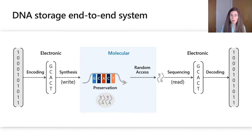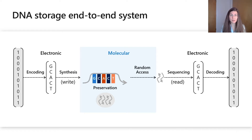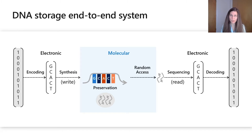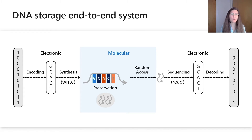Let me walk you through a DNA data storage system. We start with bits and convert them into bases — that's the encoding process. Then we make the molecules; that's the write process, also called DNA synthesis, which takes us into the molecular domain. We store those molecules, and when it's time to read, we do random access — selecting molecules that contain the data we want to read. We sequence them, which converts that information back into the electronic domain as a noisy representation of the molecules. Then we use coding theory to recover the bits — not unlike what we do with hard drives and flash drives.